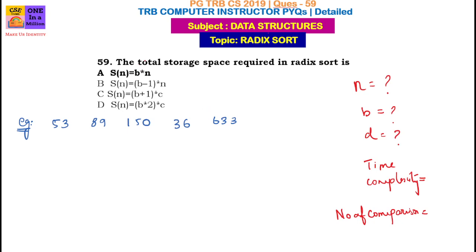First, we have to look at the total storage space required in radix sort. We have to calculate the radix sort — the storage space, the time complexity, and the number of comparisons.